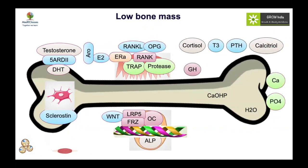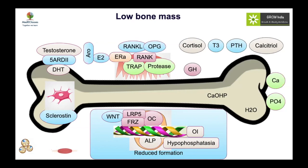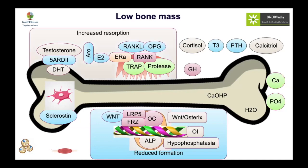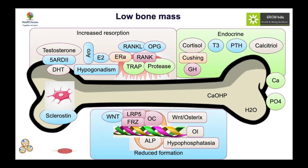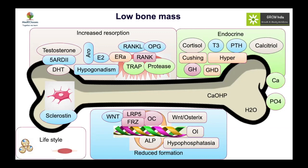Low bone mass can result from problems of bone formation — classically osteogenesis imperfecta — or from alkaline phosphatase deficiency as in hypophosphatasia. It can be due to a problem with the osteoblast itself via the Wnt pathway, increased resorption from testosterone or estrogen deficiency, or other endocrine disorders including Cushing's syndrome, hyperthyroidism, hyperparathyroidism, abnormal calcitriol action, and growth hormone deficiency. We will focus mainly on OI and glucocorticoid-induced osteoporosis.